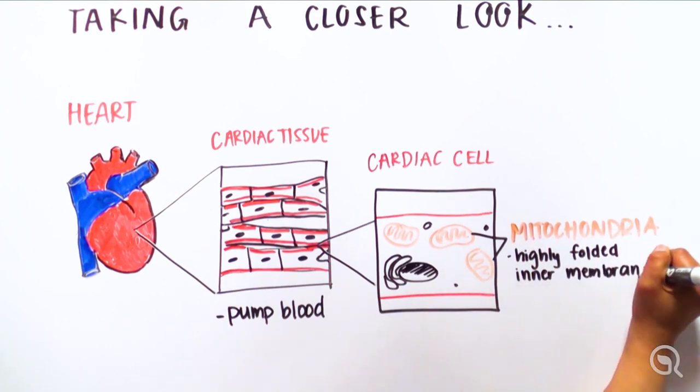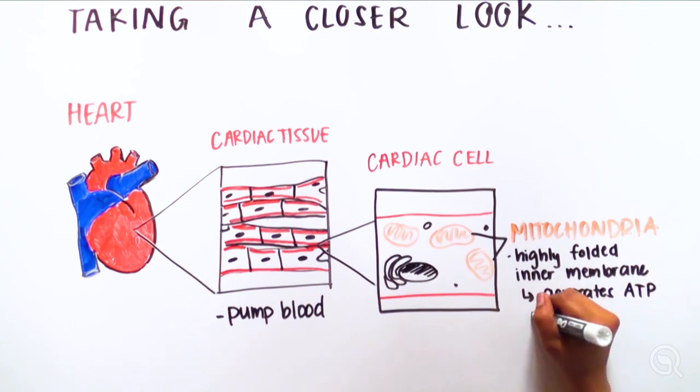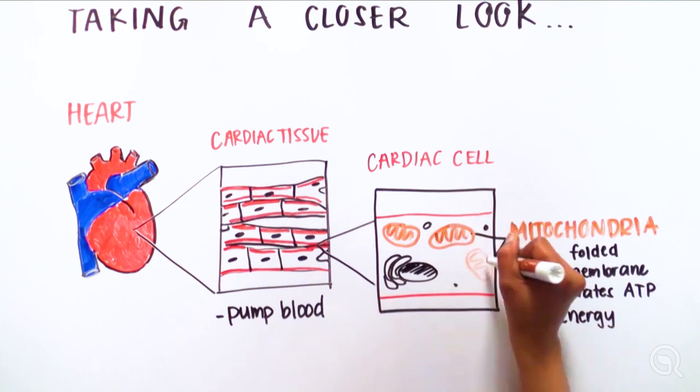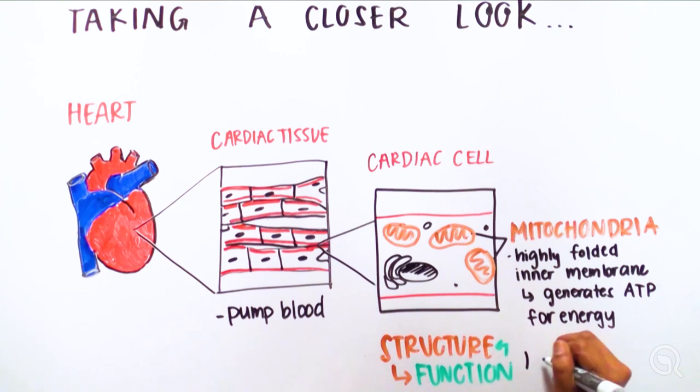Each mitochondrion consists of a highly folded inner membrane with increased surface area to facilitate chemical reactions that convert food to ATP to power up each cell. Structure determines function in a cell.